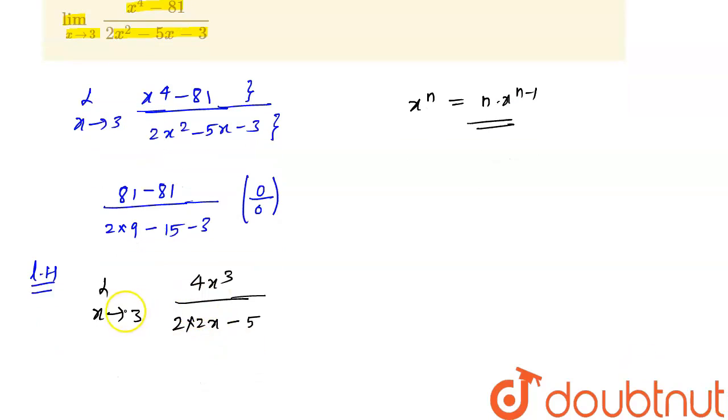Now if we put the value of x equal to 3, it will become limit x tends to 3: 4·3^3 = 4·27 upon 2·2·3 - 5. So it will become 27·4 = 108 upon 12 - 5 = 7.